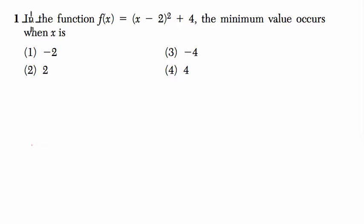Okay, let's start by reading the question. In the function f of x equals x minus 2 squared plus 4, the minimum value occurs when x is, which is the following.